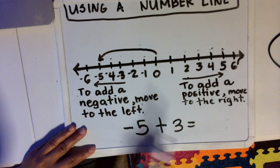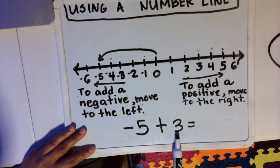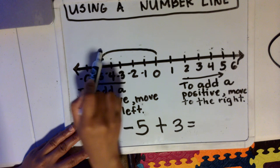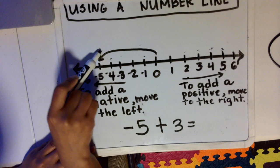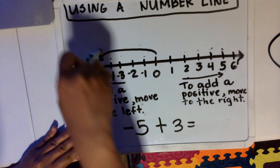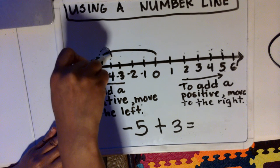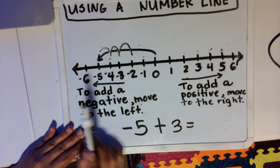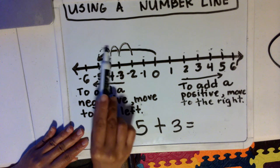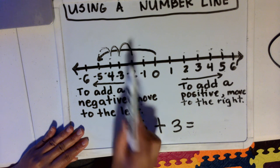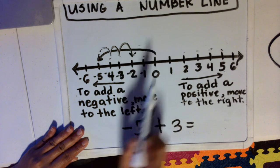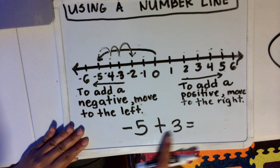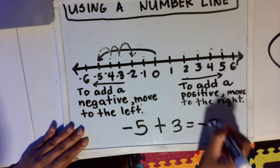From where we're at, we are going to add a positive three. Because to add a positive, we move to the right. So from where we're at right now, we're going to add three steps to the right: one, two, three. So our endpoint is negative two. Therefore, negative five plus three is negative two.